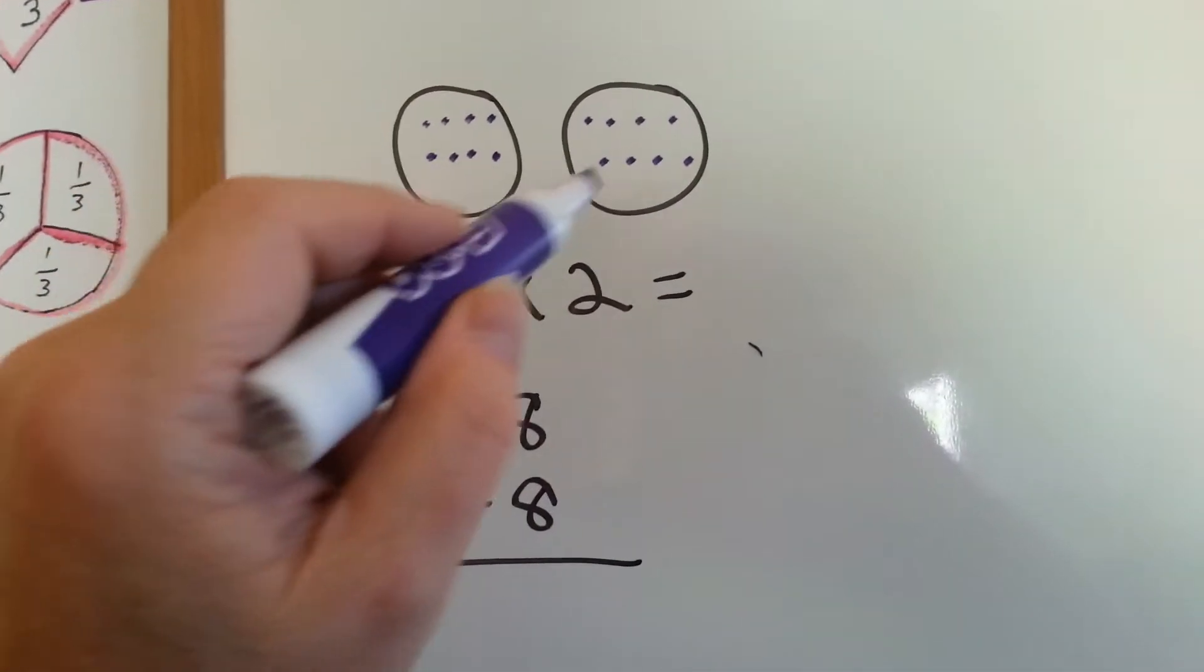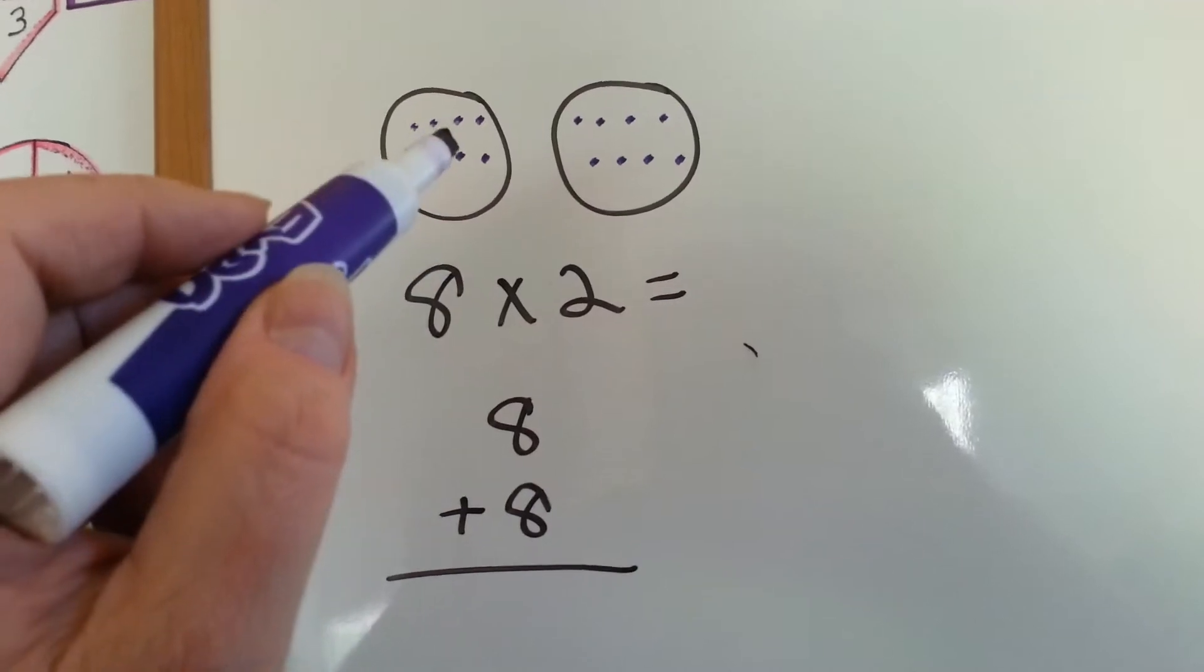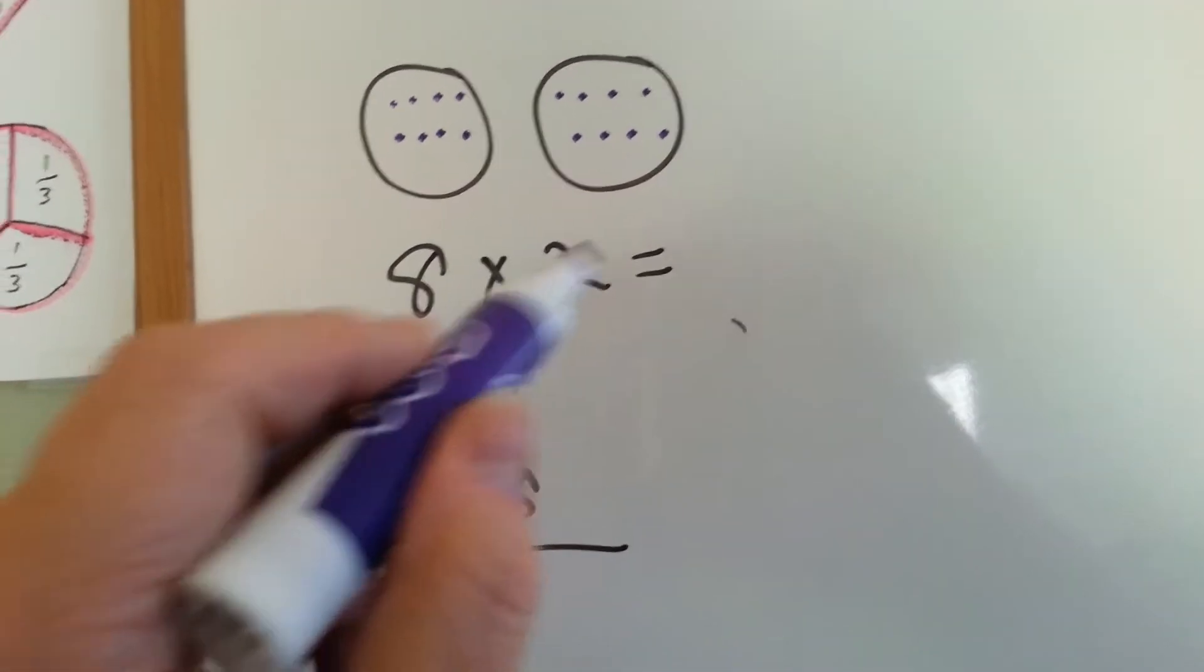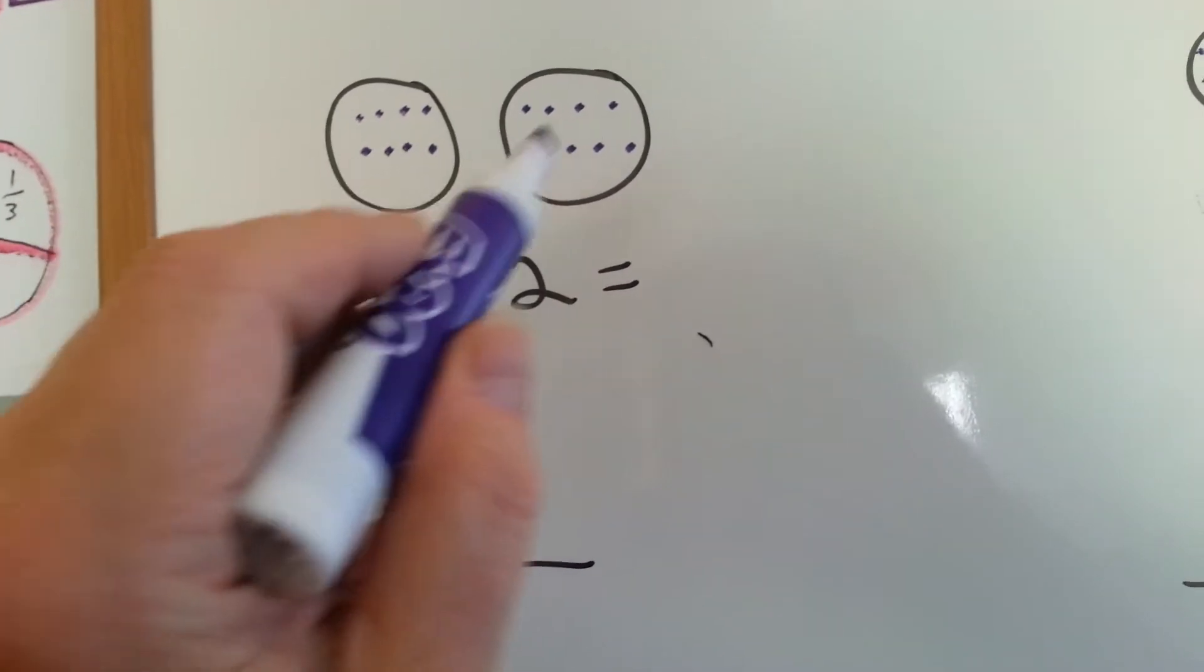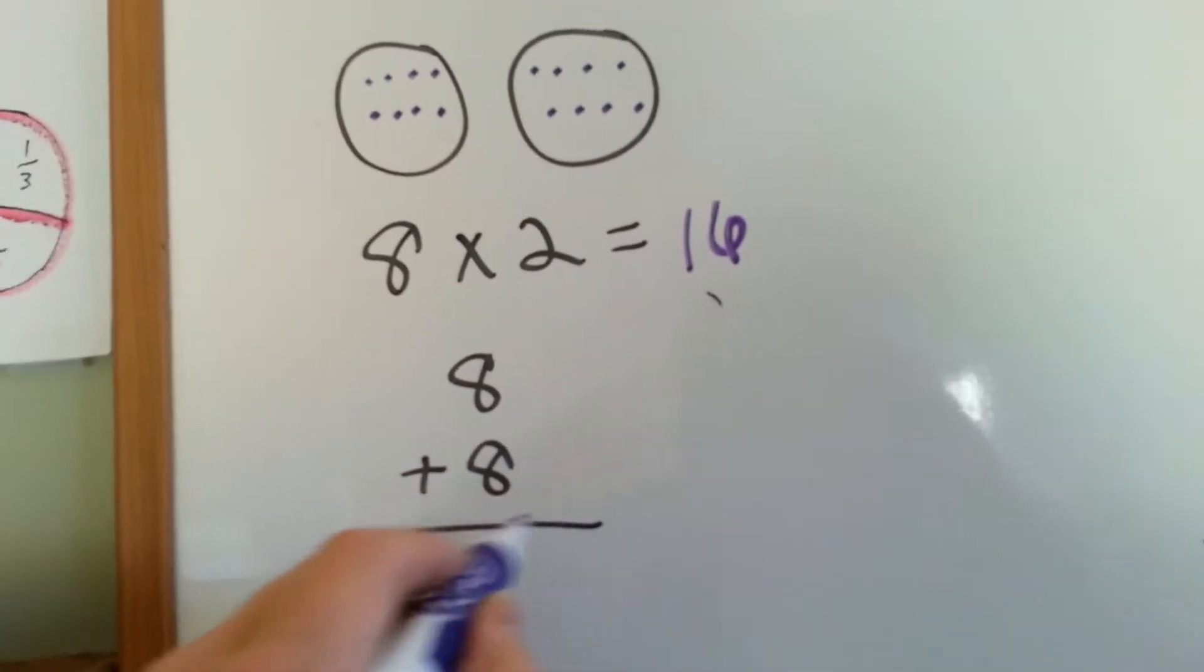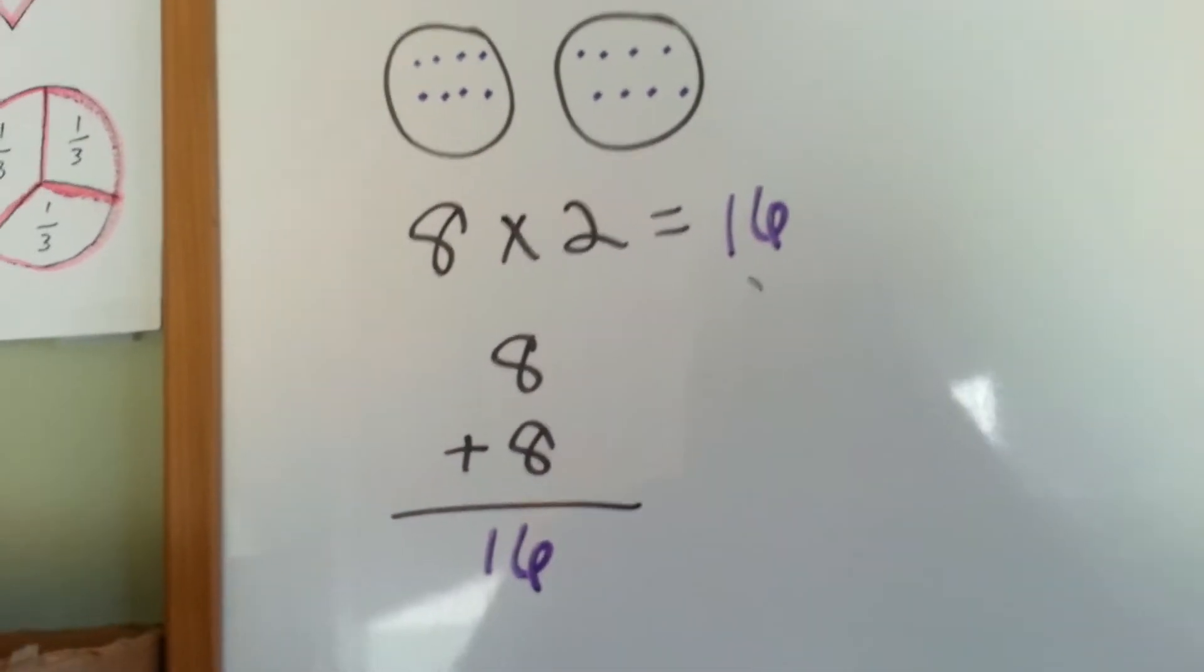This circle has eight and this circle has eight. So we have eight one time, two times. See? Eight times two is the same as eight plus eight. Eight times two is sixteen. That's what eight plus eight is.